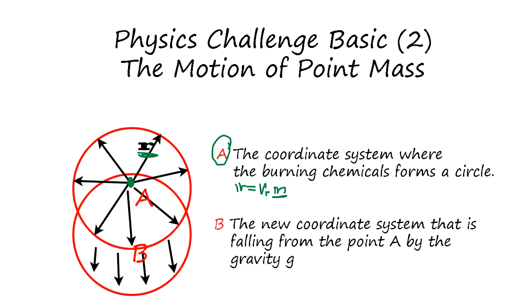Where the burning chemicals form a circle. Since we assume Vr is same for every direction, it's going to be a sphere, not circle but sphere. And we have to show that when gravity falls, the new coordinate system...